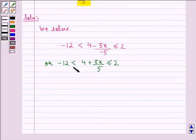Now we can multiply throughout by 5, and this gives us -60 < 20 + 3x ≤ 10.